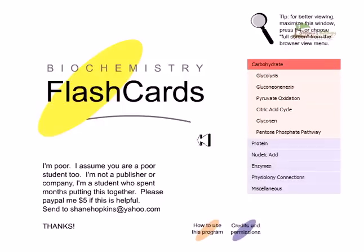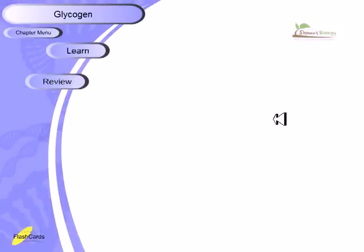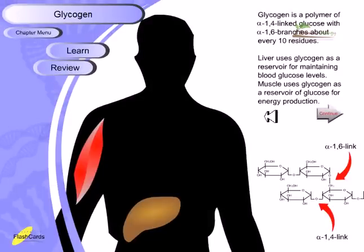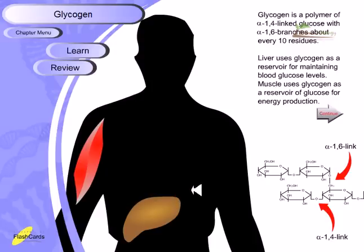Hello friends, in this video tutorial we'll be talking about glycogen metabolism. Glycogen metabolism is very important because glycogen is a much more complex form of glucose. Glucose can be stored in muscle cells as well as in the liver as glycogen. Glycogen is stored when we have a large amount of glucose in the bloodstream.